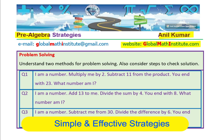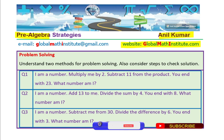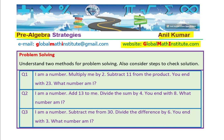Let's see the second question. I am a number. Add 13 to me. Divide the sum by 4. You end up with 8. What number am I? Question number 3: I am a number. Subtract me from 30. Divide the difference by 6. You end up with 3. What number am I? We are also using this time to introduce some critical keywords in word problems.